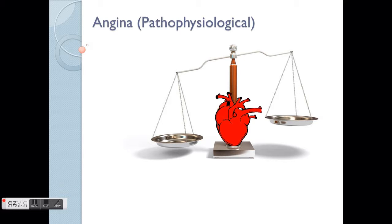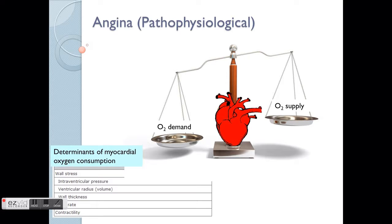As shown in the diagram, the blood supply towards the heart itself has to be equal or balanced. Angina occurs when the demand for oxygen by the heart is actually much higher than the supply, meaning the heart has insufficient oxygen supply, which can cause all the cells in the heart to die off.